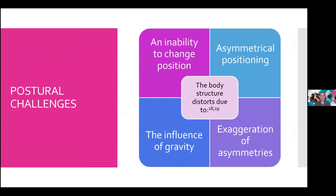When we talk about postural challenges, there is a set path to the reasons why body structure distorts. Initially we have the individual's inability to change position independently — through physical concerns, cognitive impairments, communication or sensory issues — which leads to asymmetrical positioning. Gravitational forces can then trap individuals in destructive postures, resulting in the exaggeration of those asymmetries, unequal loading on body segments, and significant postural challenges such as pelvic instability, posterior pelvic tilt, increased thoracic kyphosis and scoliosis.